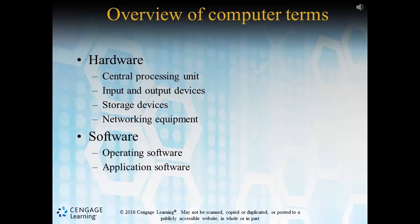An output device is something that allows a user to extract information produced by the computer. An easy example of this is a printer. A USB stick can also serve as both an input and output device. Speaking of USB sticks, let's cover storage devices — these components hold data that will be used during processing. Hard drives, USB sticks, CDs, etc. fall into this category.